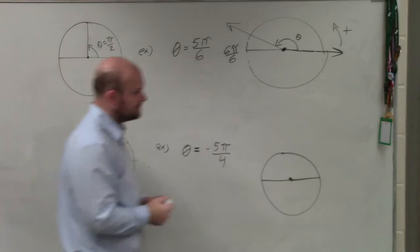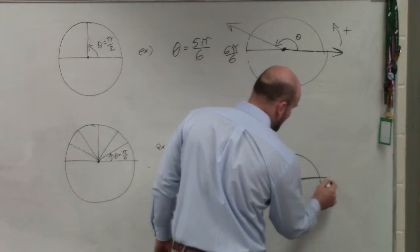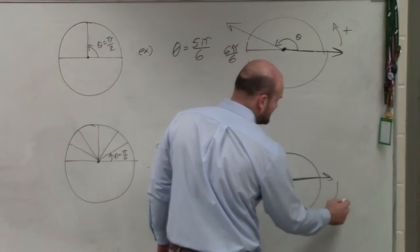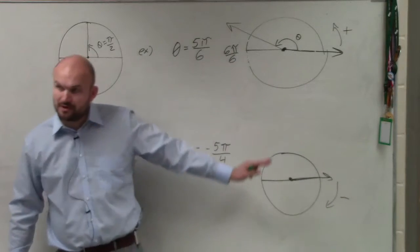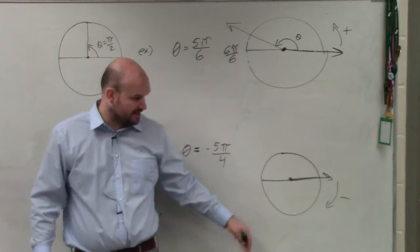For the negative 5 pi over 4, again, we identify our initial side. I can say that my angle is negative, so therefore I'm going to be moving in the counterclockwise direction.